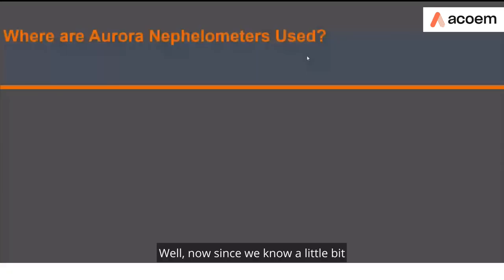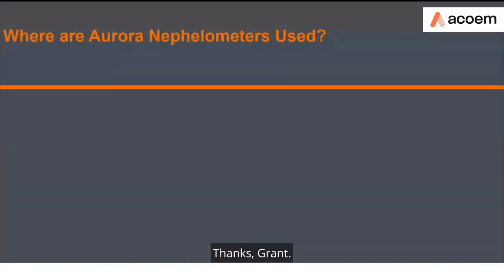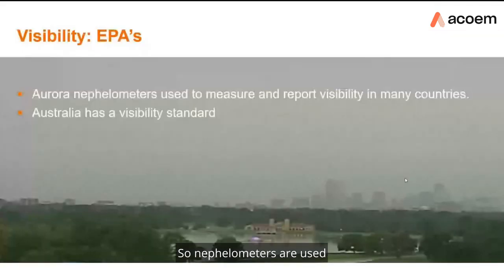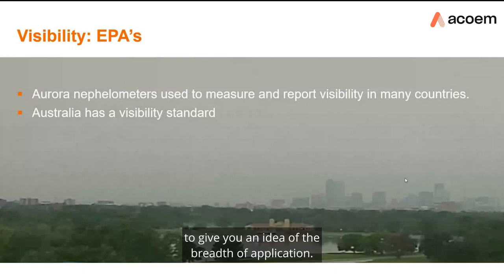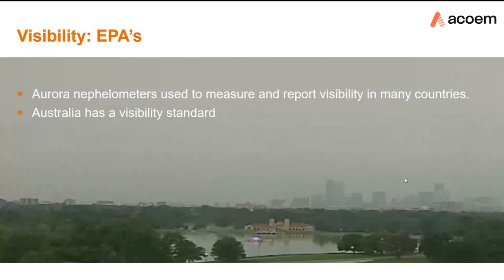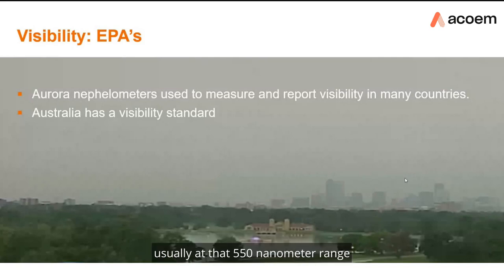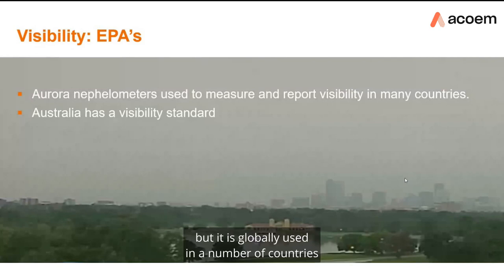Nephilometers are used in a large number of different applications. The Aurora 1000 is used in many visibility applications for environmental pollution authorities around the world, measuring and reporting visibility usually at the 550 nm range. Within Australia in particular there is a standard, so it is used in a number of different states for local EPA monitoring and reporting, and it is also globally used in many countries for visibility reporting.